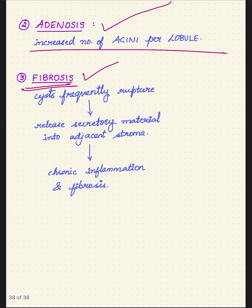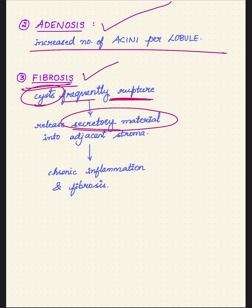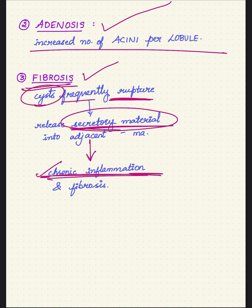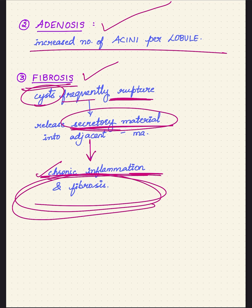Coming to the other component: fibrosis. Why does fibrosis occur? Because the cysts frequently rupture within the breast. Because of this rupture, they release their secretory material — the fluid — into the adjacent stroma. This leads to chronic inflammation. Throwing out the secretory material into the adjacent stroma incites chronic inflammation, and due to that, fibrosis occurs. So all three components — cystic change, fibrosis, and adenosis — constitute fibrocystic disease of the breast.